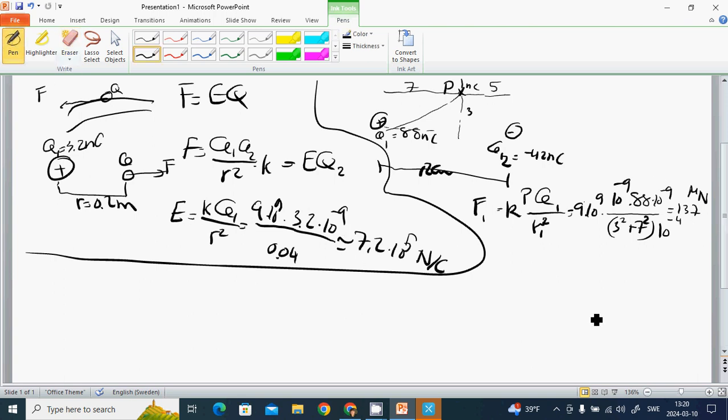Then F2 is k times q times q2 over r2 squared, which is 9 times 10 to the power 9, multiplied by 42 times 10 to the minus 9. The distance is square root of 3 squared plus 5 squared, times 10 to the minus 4. This equals minus 233 micronewtons.